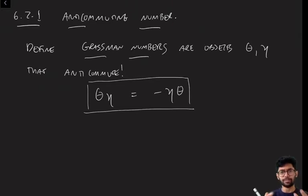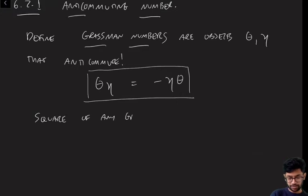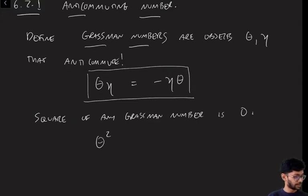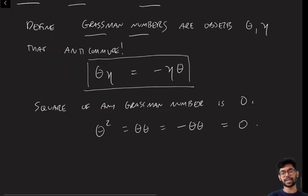I want to stress: these are just numbers, not operators in a Hilbert space. This means the square of any Grassmann number is zero, because θ·θ = −θ·θ = 0. This fact will turn out to make algebra refreshingly easy compared to normal numbers. Grassmann numbers are algebraically far simpler than normal ones. We can multiply a Grassmann number by a normal number in the normal way.